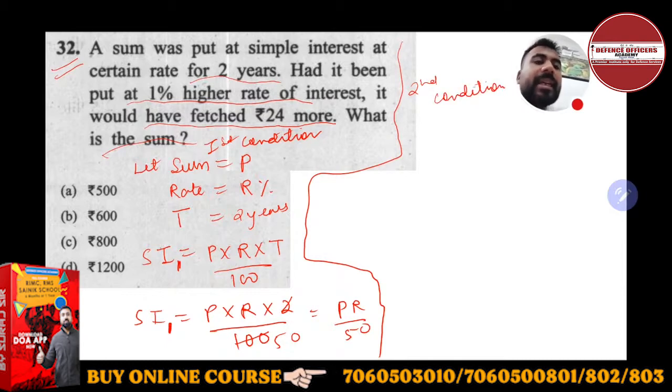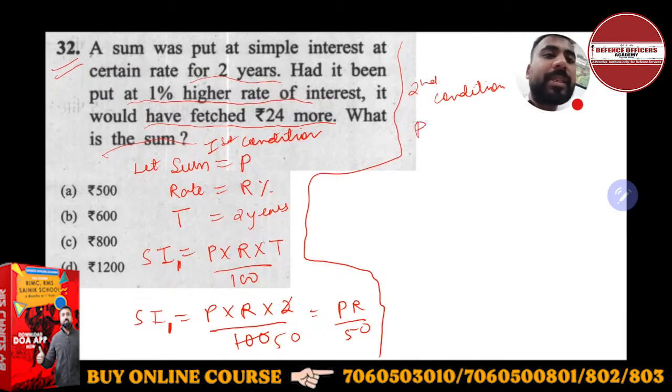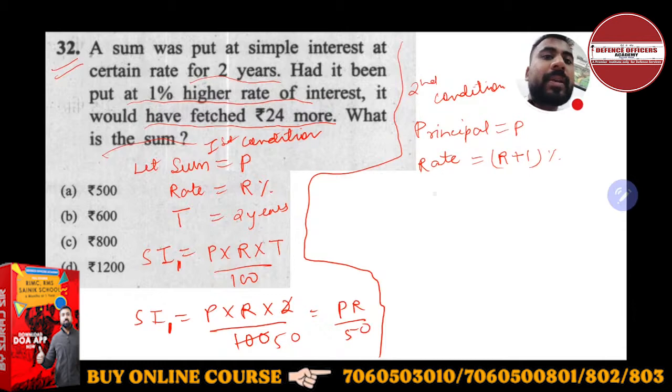He's giving you the second condition that if rate is increased. Principal is same, sum or principal is nothing but P. Rate is 1% increased, so R + 1%. Time will be again the same, two years.